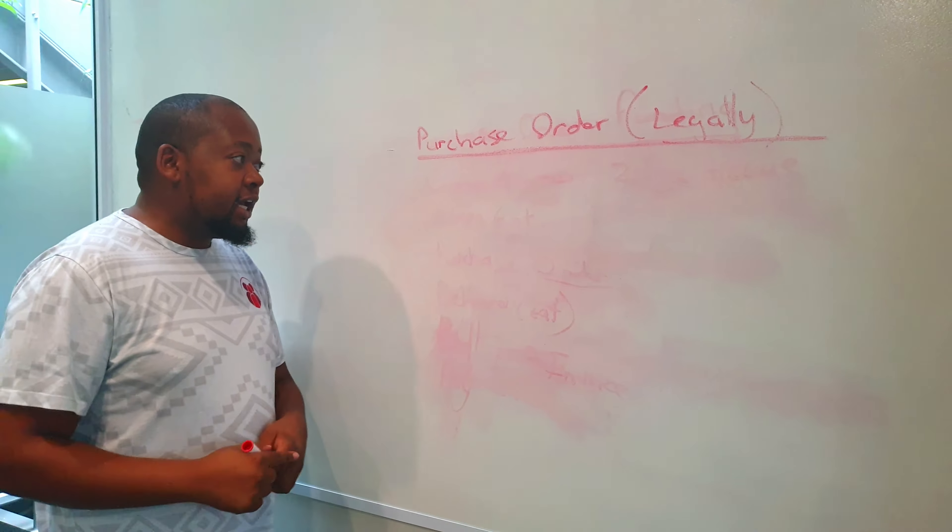Inside a company there'll be somebody called a buyer, and that buyer would be like the waiter — that's the equivalent in the restaurant example we're using. The buyer is the waiter in charge of that whole transaction, and the document — the purchase order with those specifications — is legally binding.